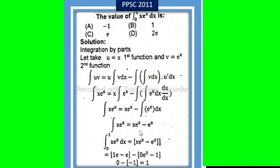This simplifies to x e^x minus e^x, with limits 0 to 1.